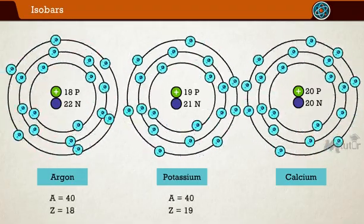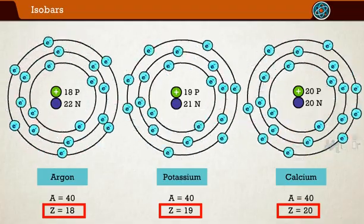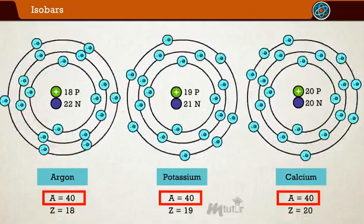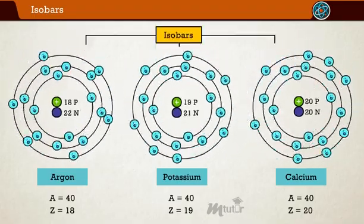let's understand with some examples: argon, potassium, calcium. If you notice the atomic number, it is different but the mass number is the same, that is 40. Hence, these elements are called isobars.